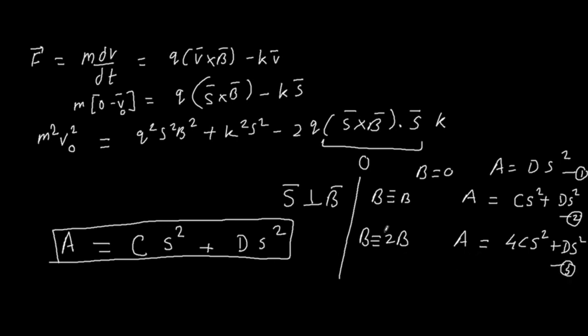How does it become 4C? If you double the magnetic field, this term Q square B square will be 4 times. When you solve these three equations, you just replace the value of A here. A is equal to D S square, so you just replace the value of A here and rearrange them. You will get a very simple equation.